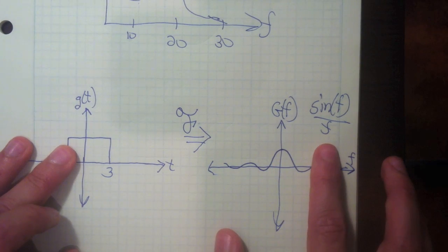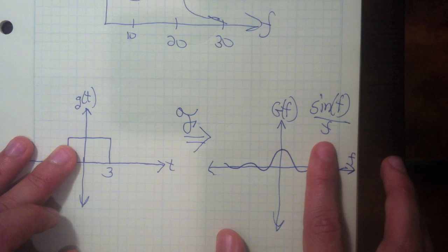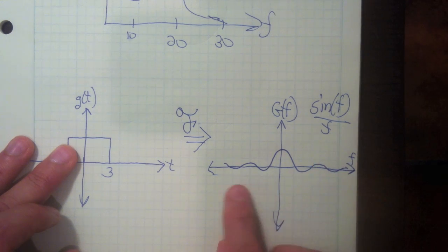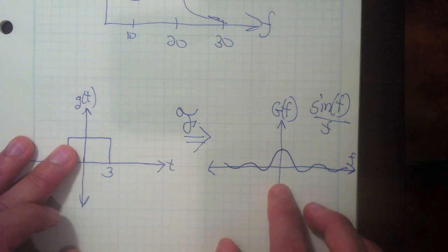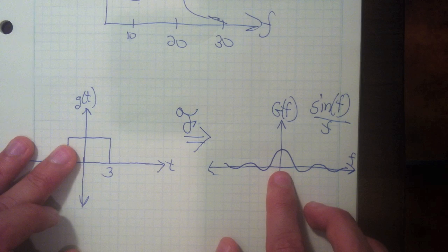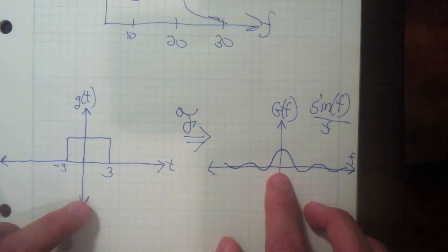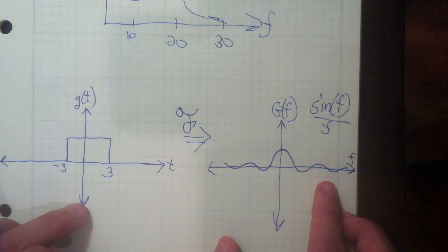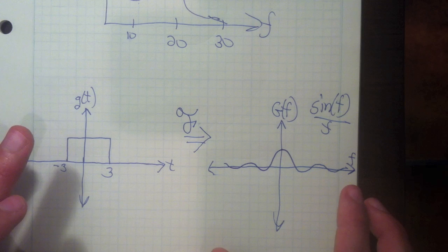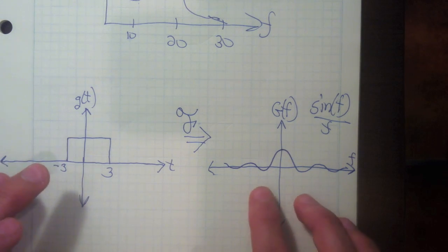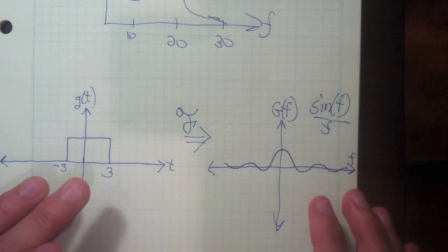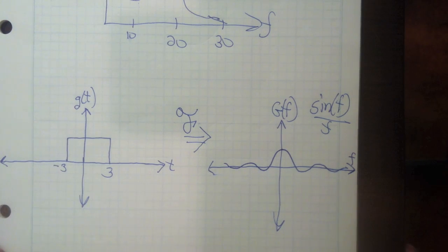And that then we take the Fourier transform and we end up with G of F. G of F is sine F over F, which is also called the sinc function. And here's what this function looks like. So this shows that the energy in the pulse function dies off with frequency. That means more energy is contained in lower frequencies and higher frequencies. And it gives you an idea of how quickly the energy dies off, where the energy is concentrated.